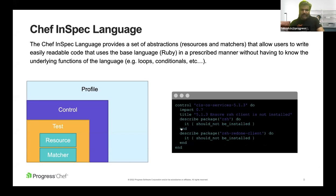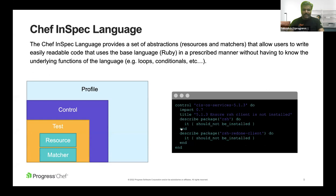The Chef InSpec language follows a DSL — Domain Specific Language — framework, with Ruby as the base code. At a high level, an InSpec profile is a group of controls. At the control level, there are a bunch of tests executed based on resources and matchers. For example, a control named 'cis' would have tests in a describe block using a resource like 'package' and a matcher like 'should not be installed.'